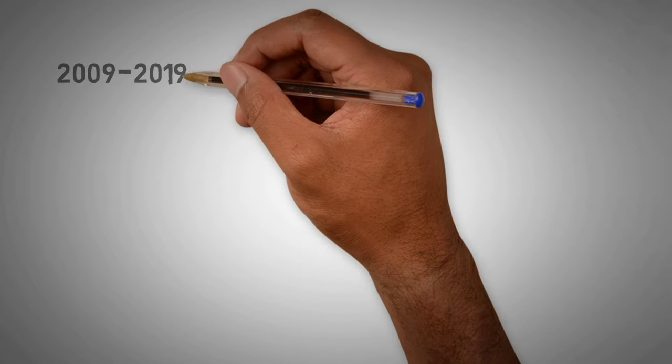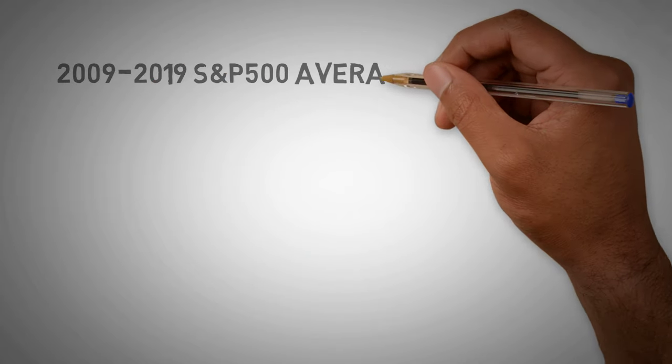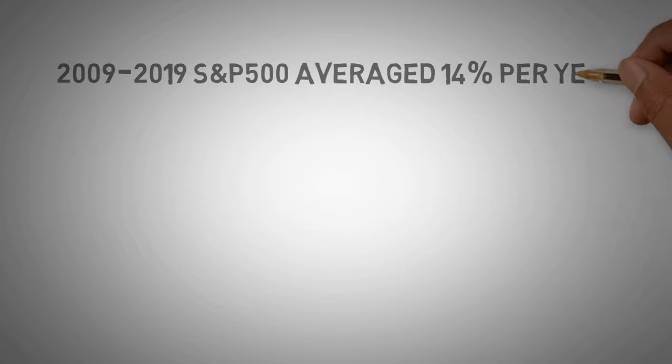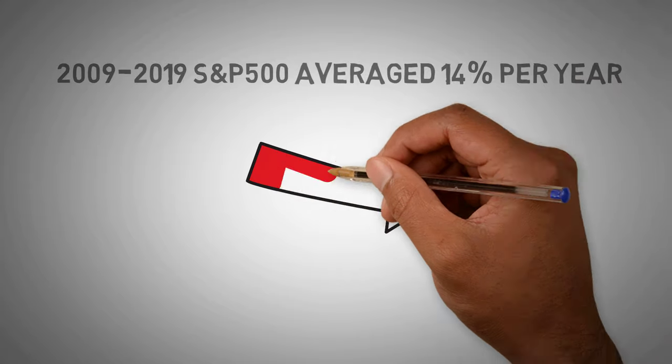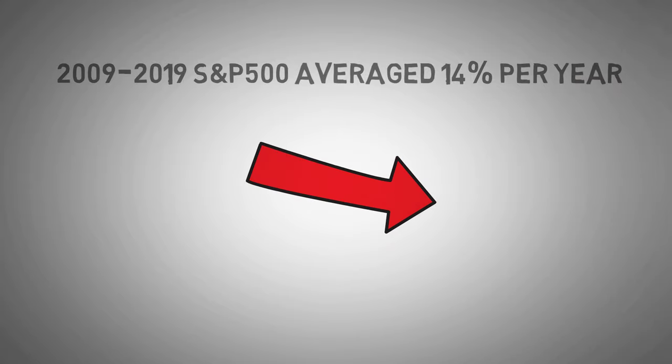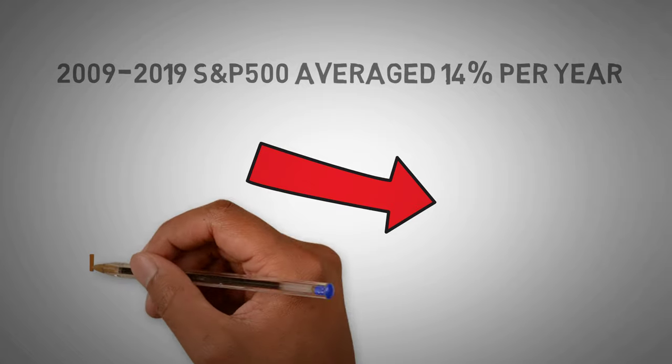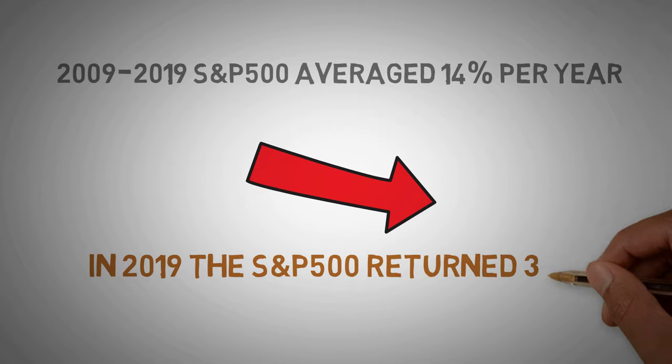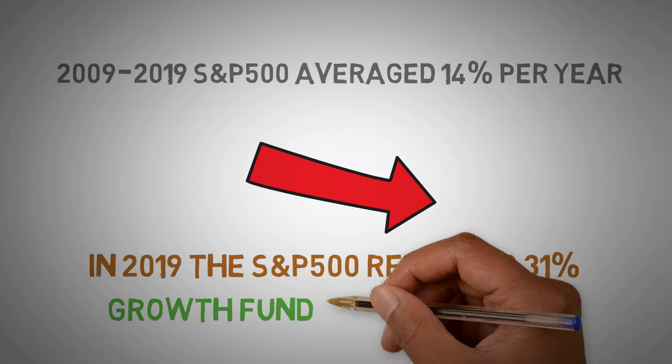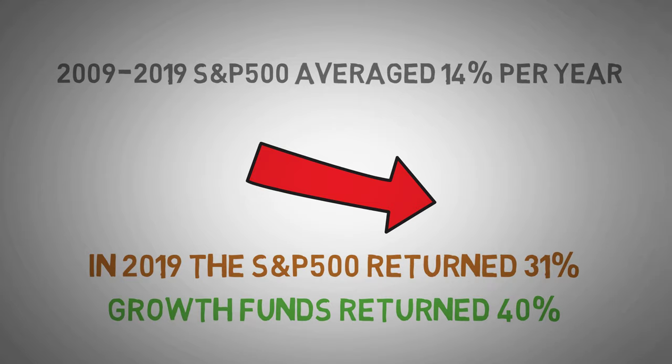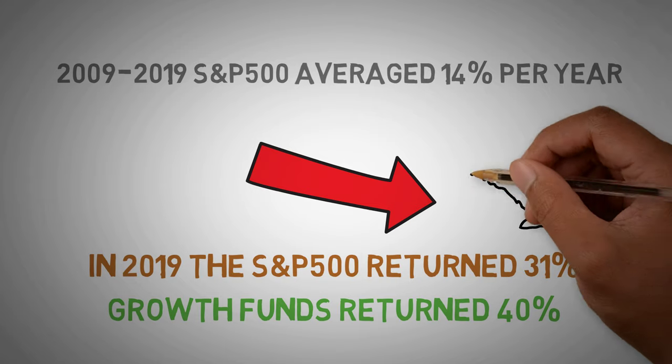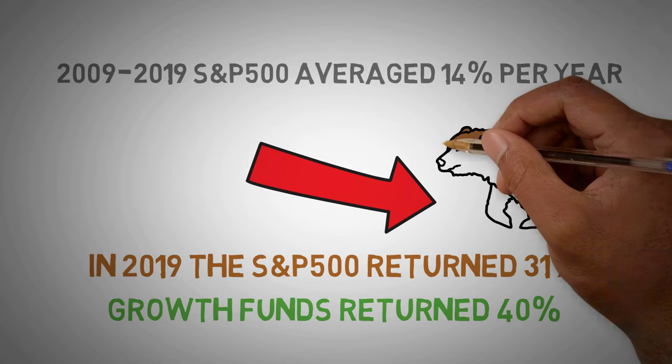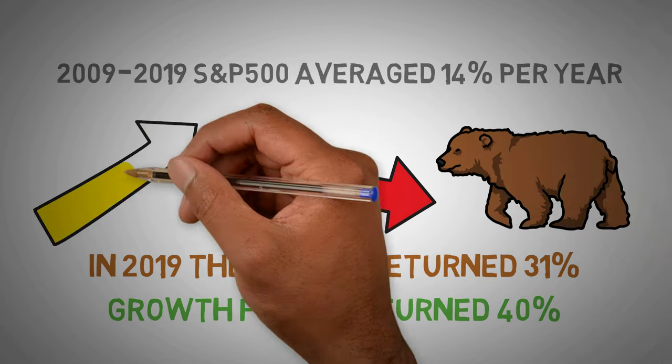From 2009 to 2019, the S&P 500 return was just under 14%. While that's not bad for a bull market period, it doesn't keep pace with growth stock funds. Even in a bull market year like 2019, the S&P 500 return was a little better than 31%, while the best growth stock funds were returning more than 40%. Although more aggressive growth funds will perform worse during bear markets, the long-term returns will be higher.